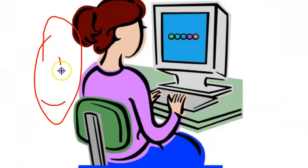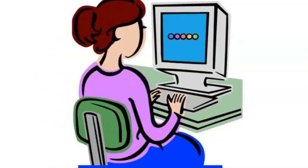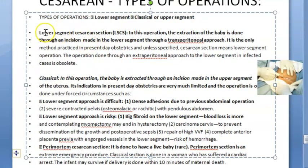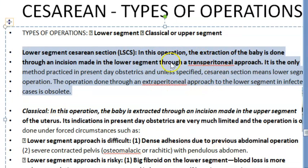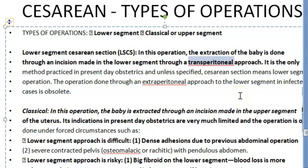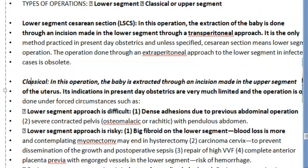So there are two types: lower segment and classical. In the lower segment, there are many types of incisions. The lower segment cesarean section (LSCS) involves extracting the baby through an incision in the lower segment via a transperitoneal approach. Whenever someone says cesarean section, they usually refer to LSCS.